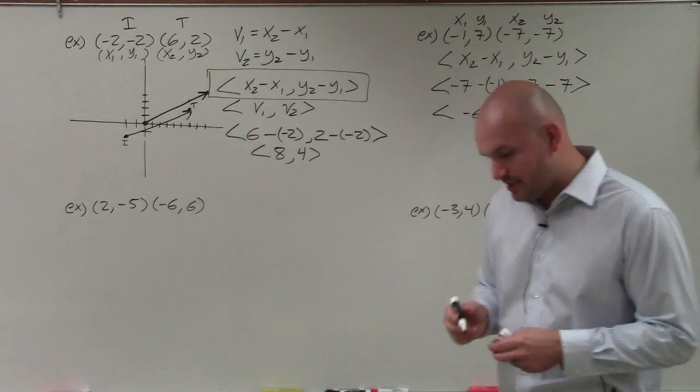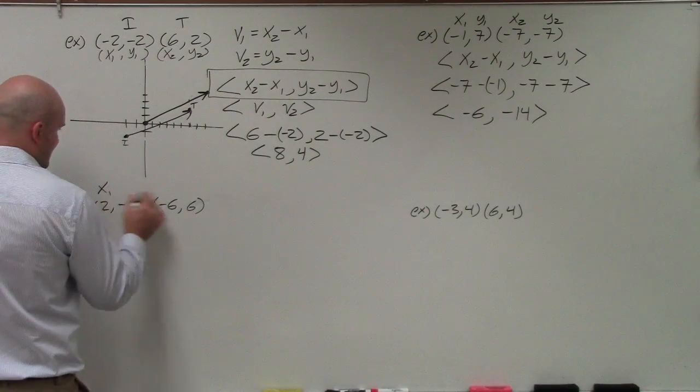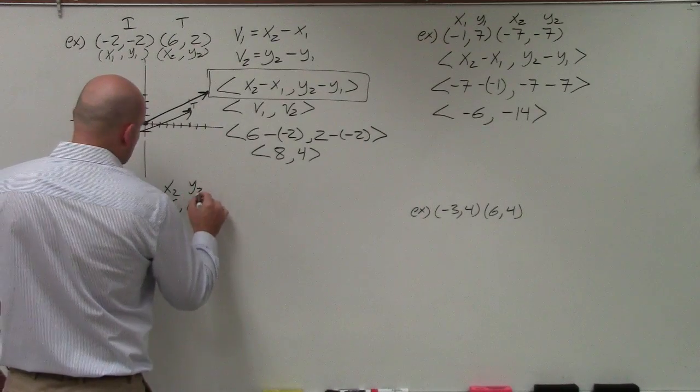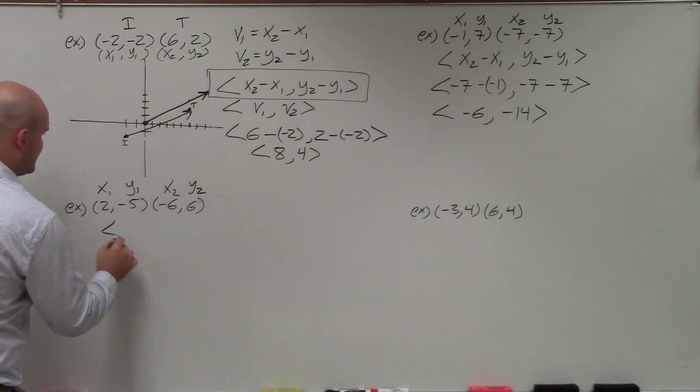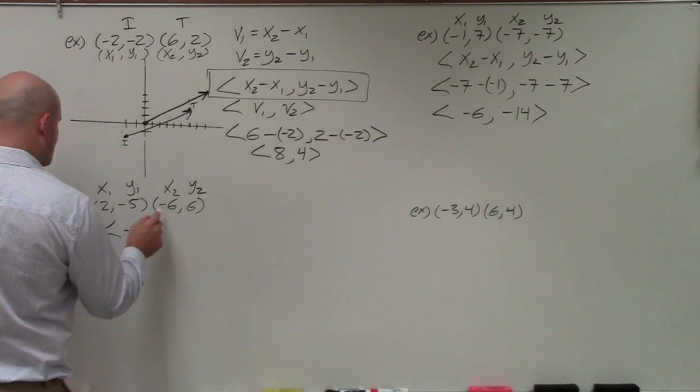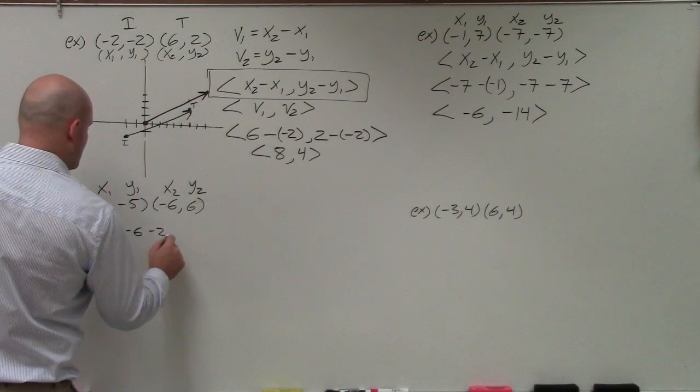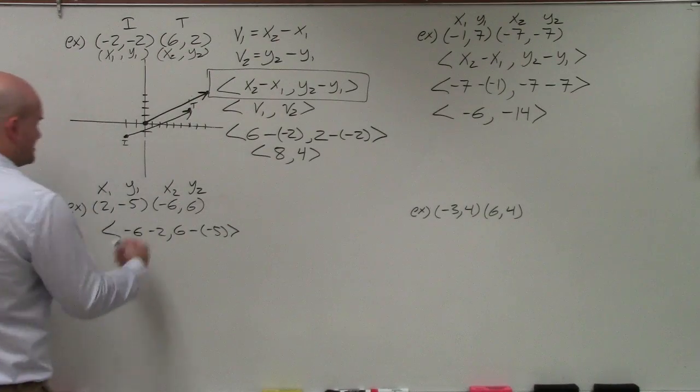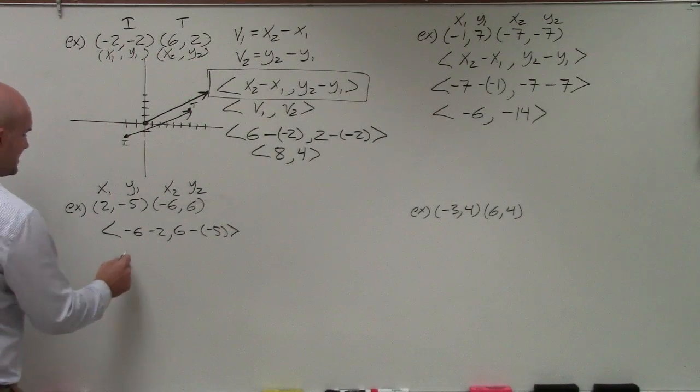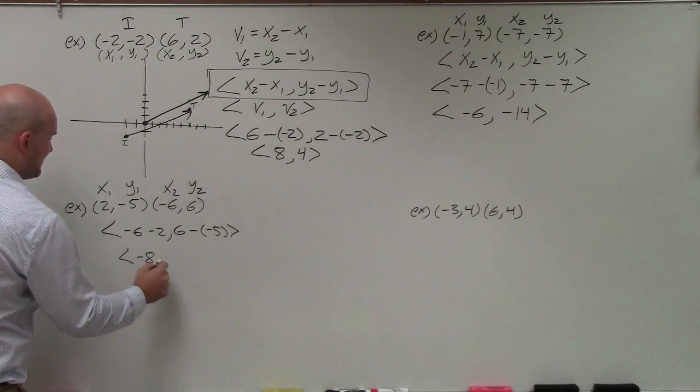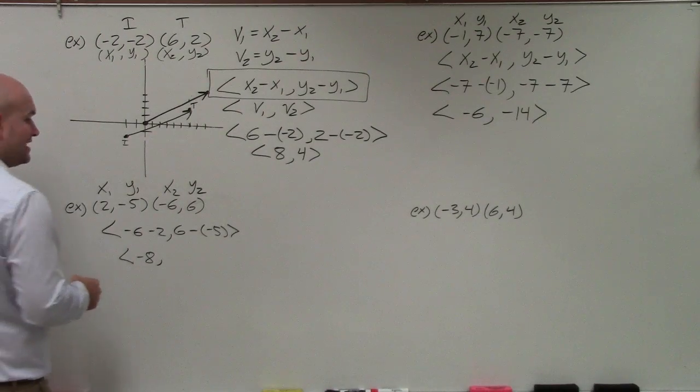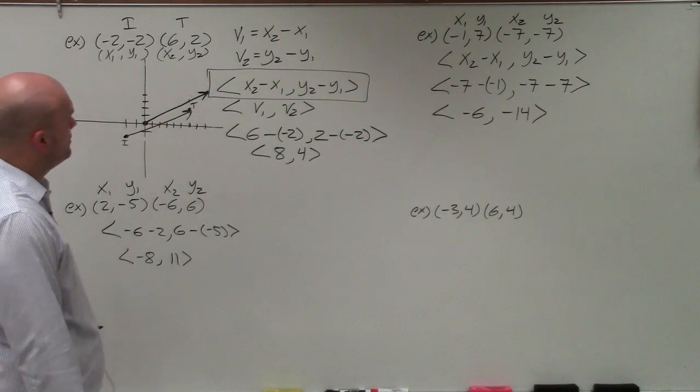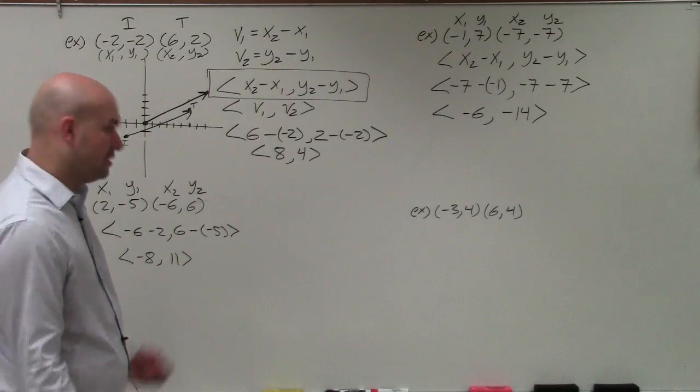All right, let's get into the next one. Again, let's just go ahead and label them because we don't want to make mistakes. And I, just like you, are very prone to making simple mistakes. So that's why I like to label everything before I get started. So this is negative 6 minus 2 comma 6 minus negative 5. So negative 6 minus 2, if you owe $6 and you borrow two more, that's going to be a negative 8. 6 minus a negative, minus a negative is the same thing as adding, so that's going to be 11.